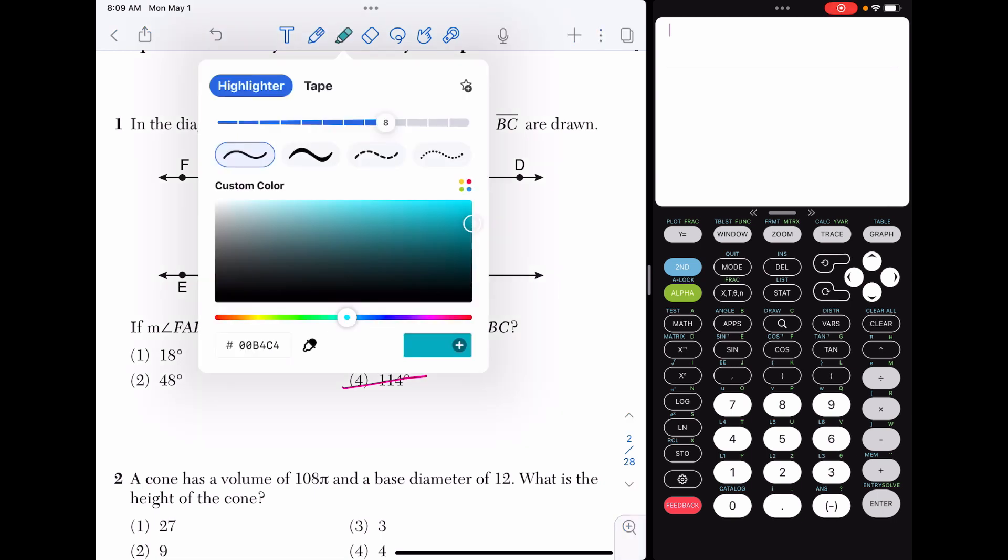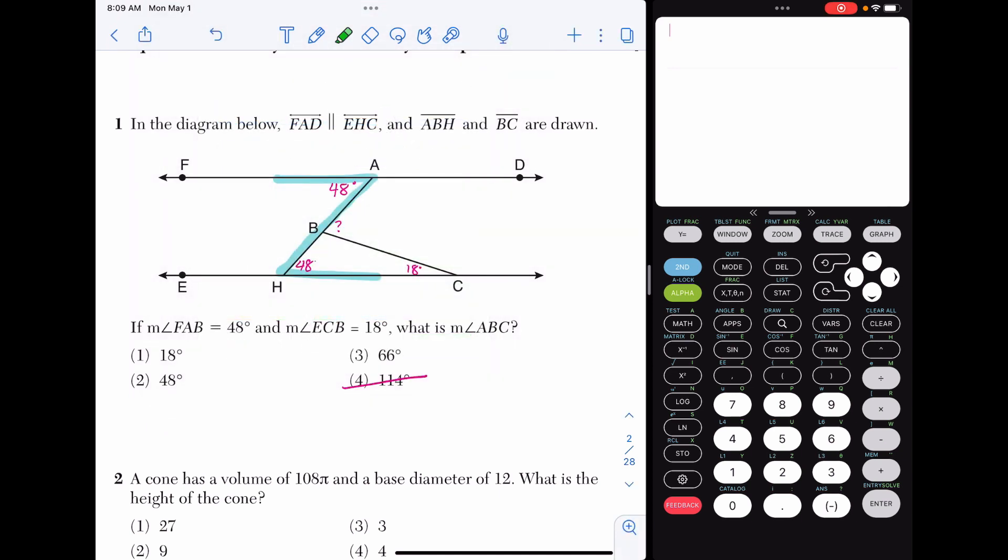The next thing that I see is I have a triangle. So if I take 180, subtract 48 and 18, I get 114. And then I know that these two are supplementary. So 180 minus 114 gives us our answer of 66 degrees, choice 3.